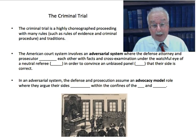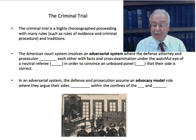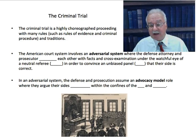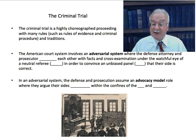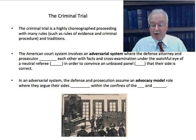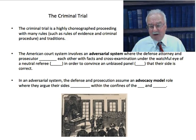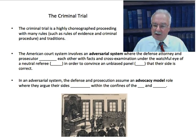The American court system involves an adversarial system where the defense attorney and the prosecutor battle each other with facts and cross-examination under the watchful eye of a neutral referee — the judge — in order to convince an unbiased panel, the jury, that their side is correct. In an adversarial system, the defense and prosecution assume an advocacy model role where they argue their sides zealously, but within the confines of the law and legal ethics. They have to follow the laws of criminal procedure, and lawyers also have ethics about not allowing false evidence to be admitted and giving the proper evidence to the other side.